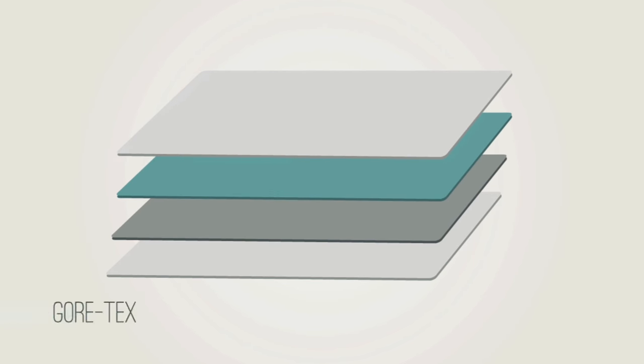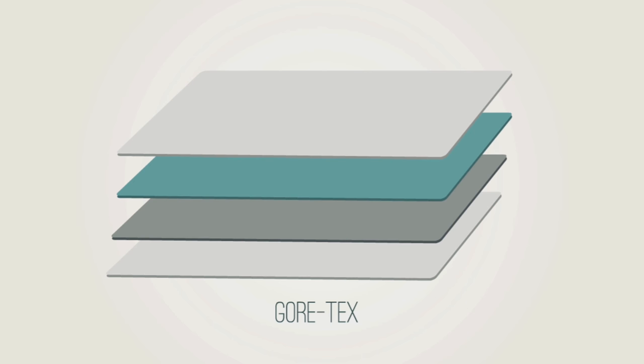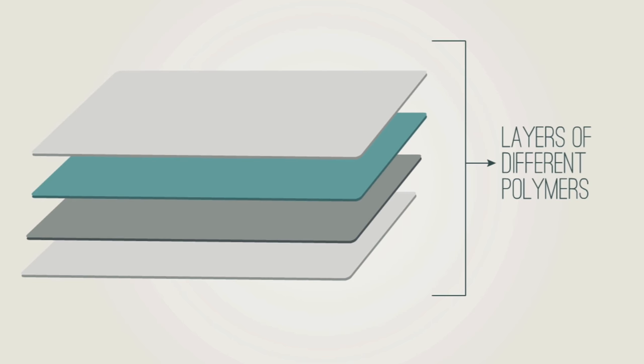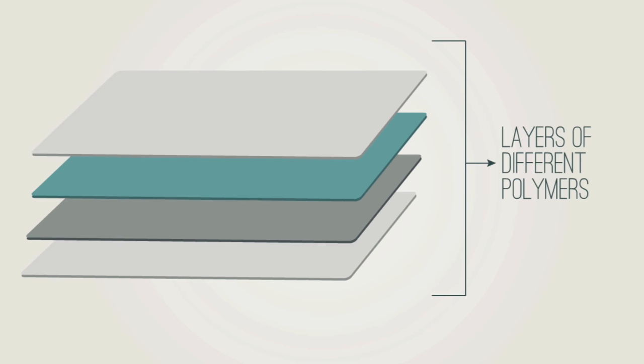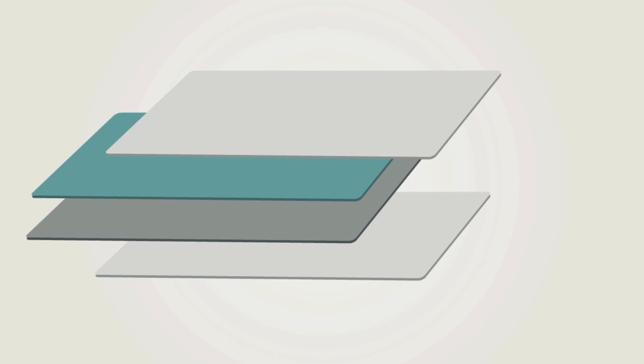The answer is that designers have started to use Gore-Tex, a designer polymer. Gore-Tex uses layers of different polymers. They include an outer layer, typically made from nylon or polyester. This makes the outer layer strong.